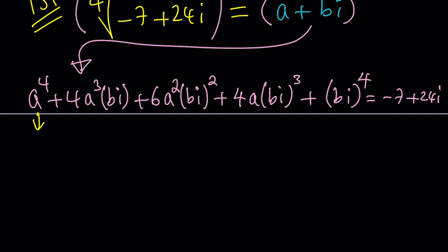This is A to the fourth. Great. This is going to be B squared, I squared. But I squared is negative 1. So that's just going to bring a negative here. So it's going to look like negative 6A squared, B squared. And then here, I to the fourth is 1. So we're just going to get B to the fourth from there. So that's the real part.